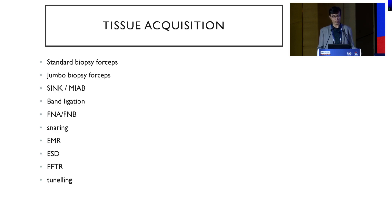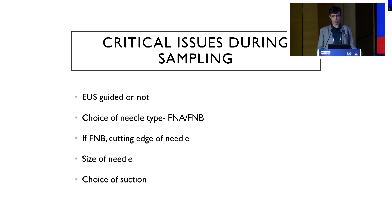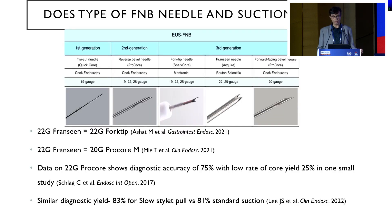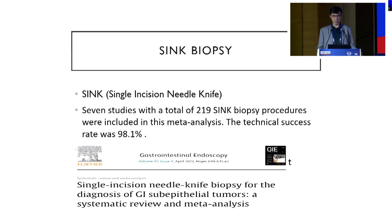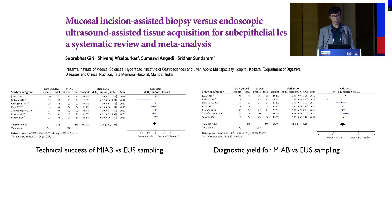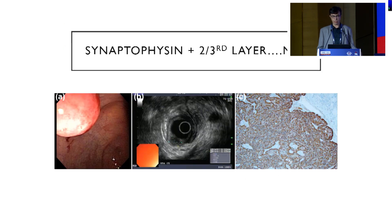Tissue acquisition can be done by a variety of methods — from standard biopsy to jumbo biopsy, special SYNC biopsy, FNA, FNB, and resection. It has been shown that FNB is distinctly better than FNA, and the Franchine needle from Boston Scientific and ProCore from Cook have both been shown to be equally good. SYNC — single incision needle knife biopsy — involves making an incision over the SEL and biopsying the material inside; studies show this is superior to bite-on-bite biopsy. A study by Suprabhat Giri and Sridhar Sundaram showed that mucosal incision-assisted biopsy is better than routine biopsy but not better than EUS-guided FNB.